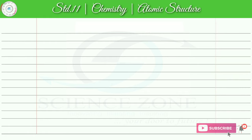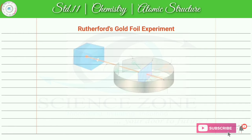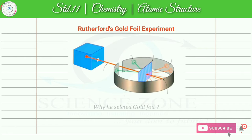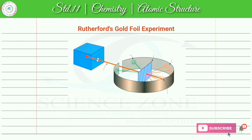The next topic is Rutherford's gold foil experiment, also called the alpha particles scattering experiment. Rutherford passed alpha particles through a thin gold foil. Gold was selected for two reasons: first, gold is a noble metal and does not react with any element; second, gold is the most malleable metal, so it can be made into an extremely thin sheet compared to other metals. The thickness used was around 100 nanometers.